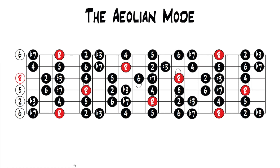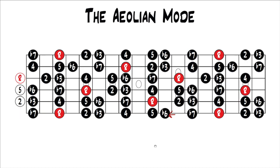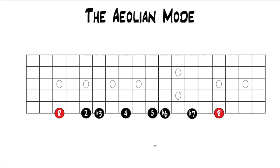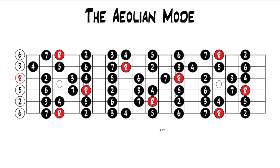To get to the Aeolian mode, we're going to do it from the Dorian mode. What's on your screen right now is the Dorian mode in G, because the Aeolian mode is only one note — one interval — different from the Dorian mode. To get from the Dorian mode to the Aeolian mode, you lower the 6 one half step to the flat 6, and that's the only difference. So the Aeolian mode is: root, 2, flat 3, 4, 5, flat 6, flat 7. The Dorian mode is the exact same except it has a major 6 instead of a flat 6, so you just lower that 6 half a step.